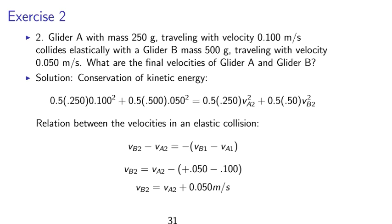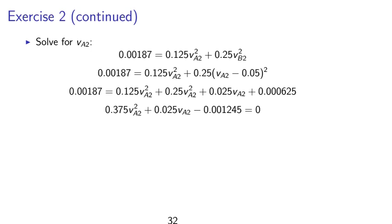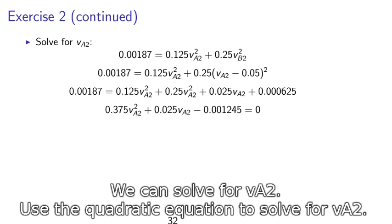Solution, we can use the conservation of kinetic energy. So we have 0.5 times 0.250 times 0.10 squared, and similarly for the kinetic energy of the second particle. Since it's elastic, we have conservation of kinetic energy. We can use the relation between velocities in elastic collision. Finally, we can solve for Va2. Note that we can use the quadratic equations to solve for the final value of Va2.